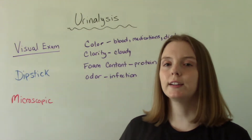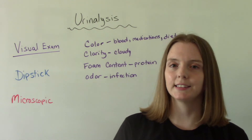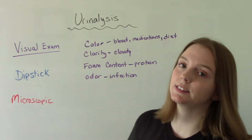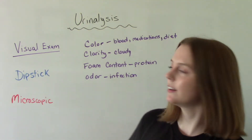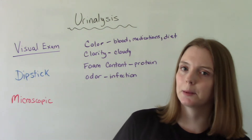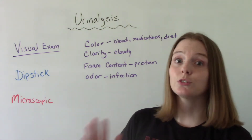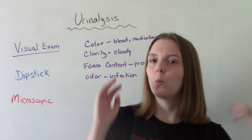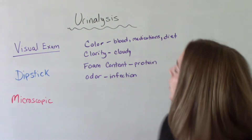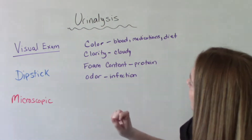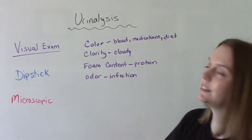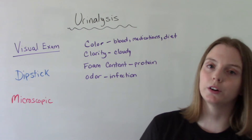The three components of a urinalysis include a visual exam, a dipstick, and a microscopic exam. Starting with the visual exam, what are we looking for? We're assessing the color, clarity, foam content, and odor.